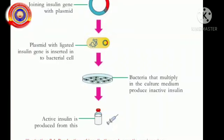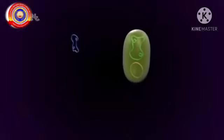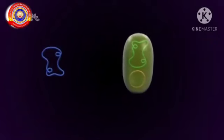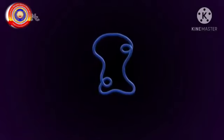The bacteria that multiply in the culture medium produce inactive insulin. Active insulin is then produced from this material.